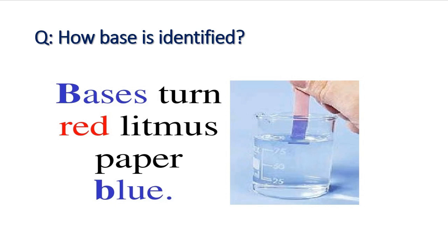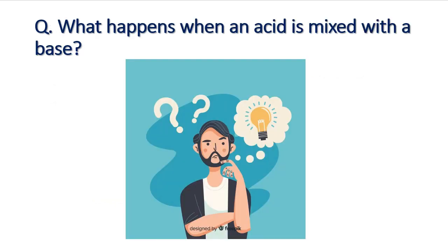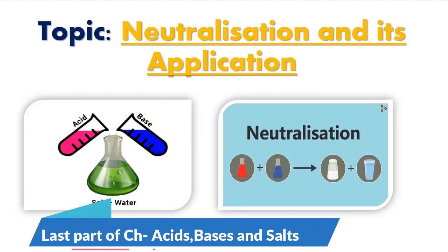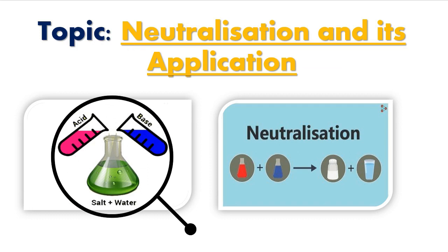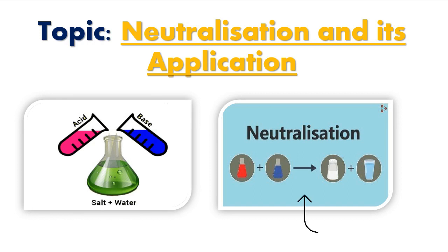So till now we have learned about acids and bases separately, but what will happen if we mix acids and bases with each other? Have you ever thought about it — what happens when an acid is mixed with a base? That is today's topic: neutralization and its application. As you can see, when acid and base are mixed in a tube, salt and water are released. So we can say that acid plus base gives salt and water.